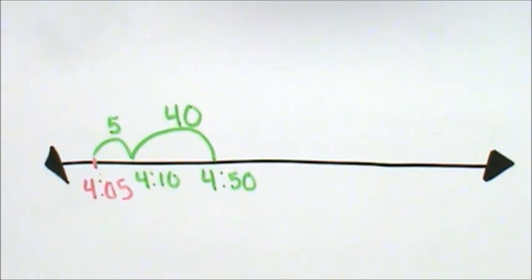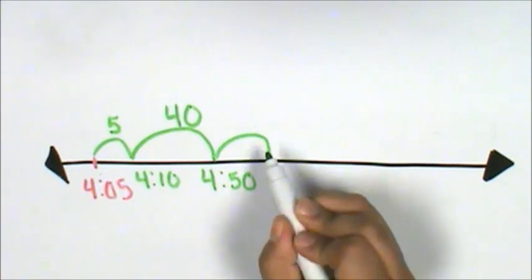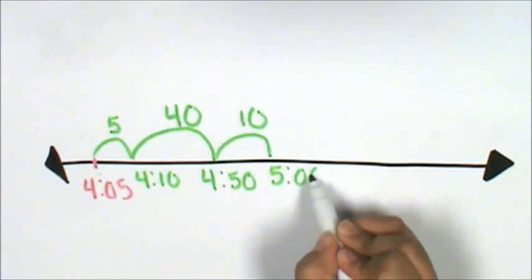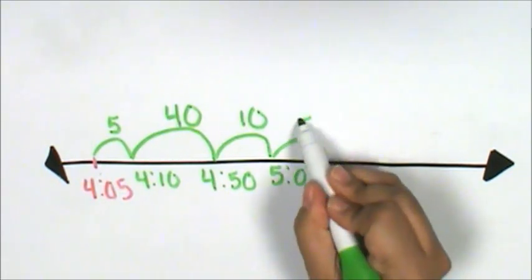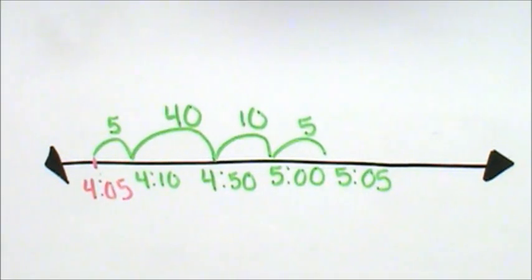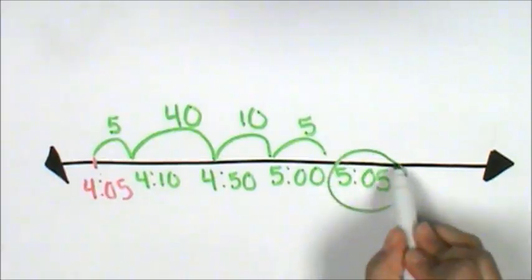Now I need to add or jump forward 15 minutes. 10 minutes, that's 5 o'clock. 5 minutes, that's 5:05. Amy went home at 5:05.